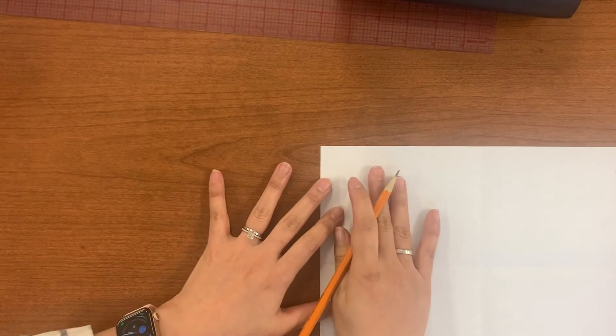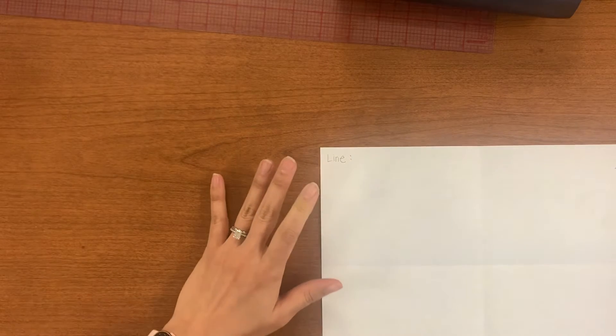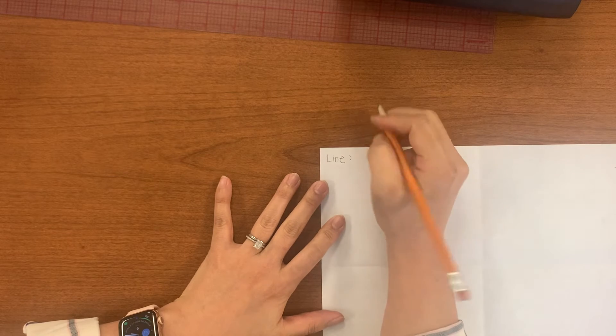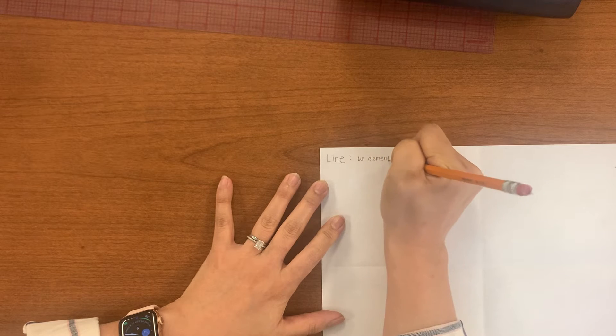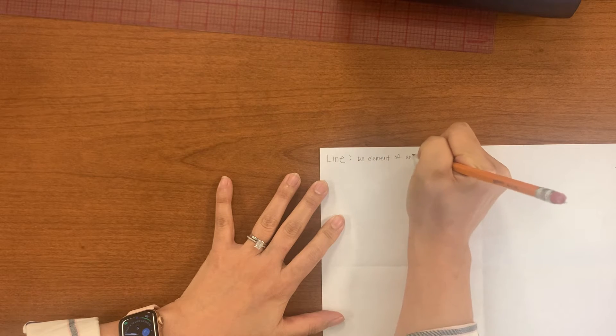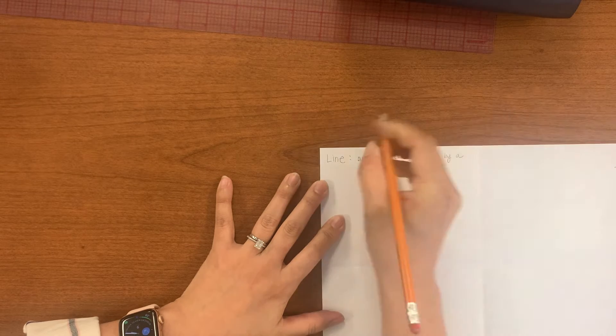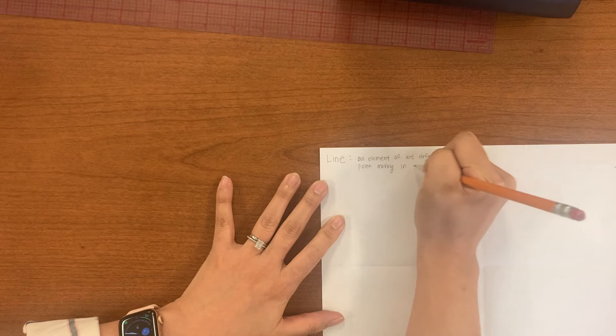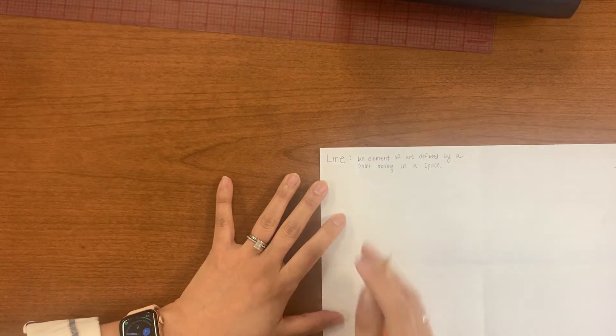So here on this top quadrant, I'm going to put line. Right? Take your time to write down the definition here. It's going to be an element of art defined by a point moving in a space.